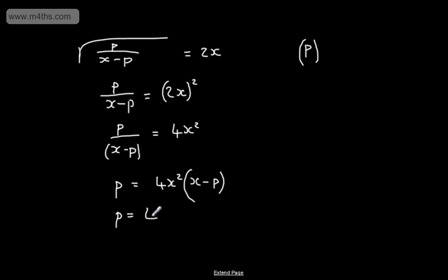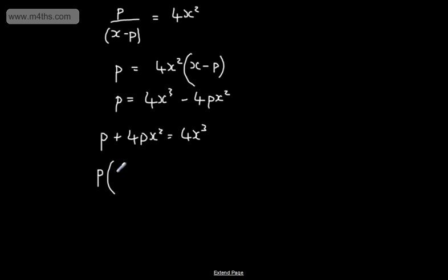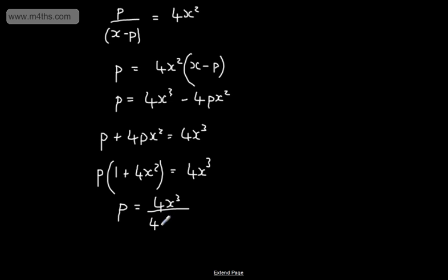So p = 4x³ - 4px². I want to make p the subject, so I'm going to add 4px² to both sides, giving p + 4px² = 4x³. I now take p as a common factor: p(1 + 4x²) = 4x³. And now I simply divide through by the content of the bracket, so p = 4x³ / (1 + 4x²). That now makes p the subject.